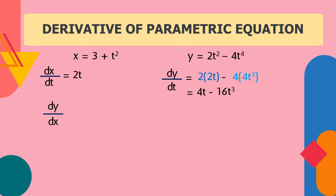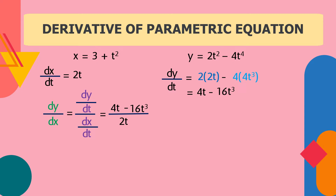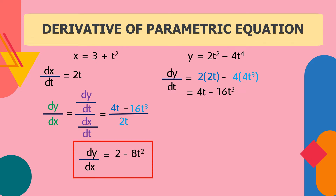Next, we're going to get the derivative of the function. The derivative of y equals dy/dt divided by dx/dt. We found the derivative of y with respect to t is 4t − 16t³, over the derivative of x which is 2t. Simplifying: 4t divided by 2t equals 2, and 16t³ divided by 2t equals 8t². So the first derivative of the function is 2 − 8t².